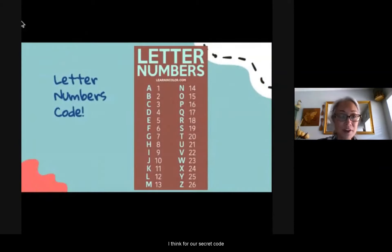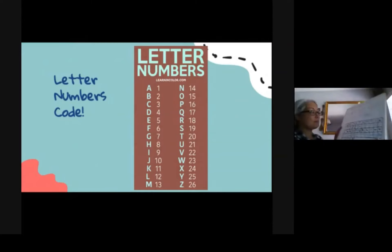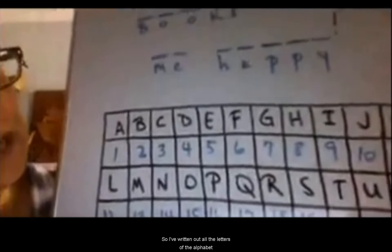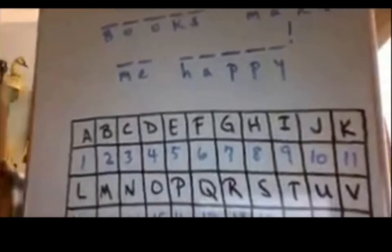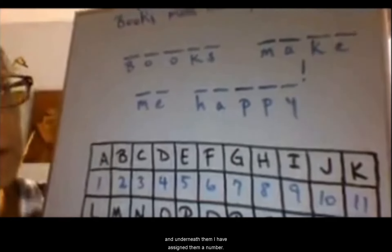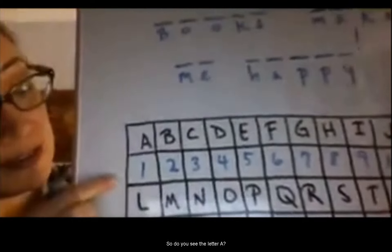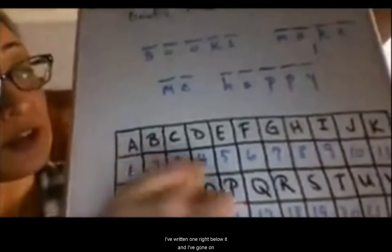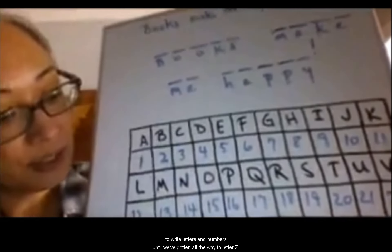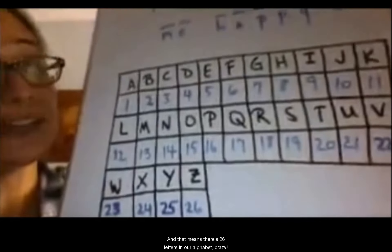I think for our secret code, we should try doing a number for each letter. So I have come up with my own chart. I hope you can see this. So I have written out all the letters of the alphabet. And underneath them, I've assigned them a number. And I wanted to make this simple. So we just went in order. So do you see the letter A? I've written the one right below it. And I've gone on to write letters and numbers until we've gotten all the way to letter Z. And do you see what number we've gotten? Yep, 26. And that means there's 26 letters in our alphabet.